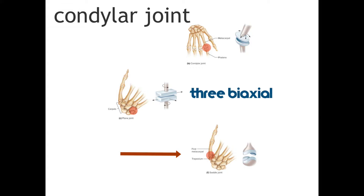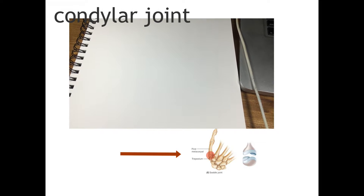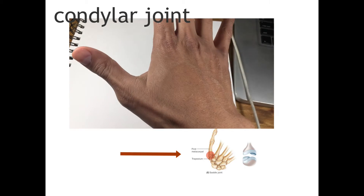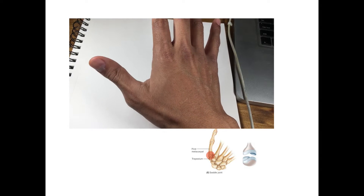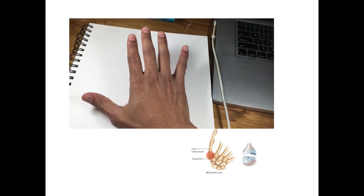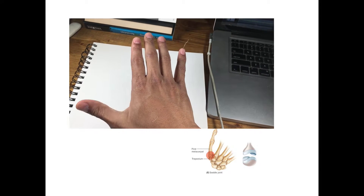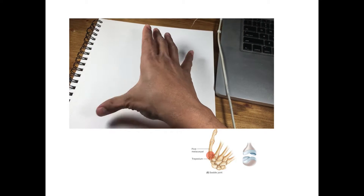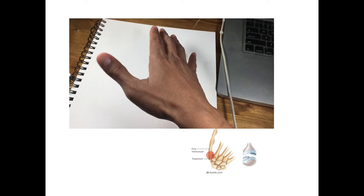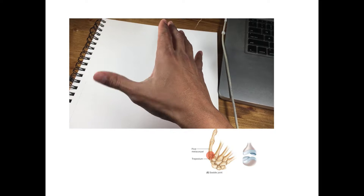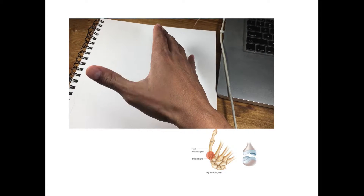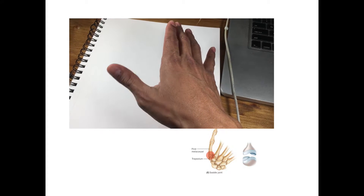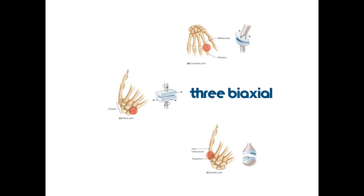The saddle joint is between the thumb — specifically between the first metacarpal of the thumb and the trapezium in the hand. Stick out your hand and notice that with your thumb you can bring it into the hand and out, move it forwards and backwards, and twirl it around, but you cannot rotate it. With both the condylar and saddle joints there is biaxial movement but no rotation. The plane joint has just a tiny bit of rotation but it's not very distinguishable — unlike the hinge or pivot joint which can actually rotate.